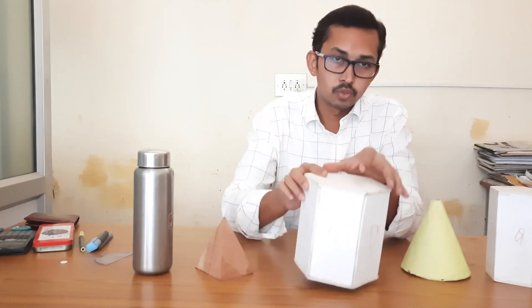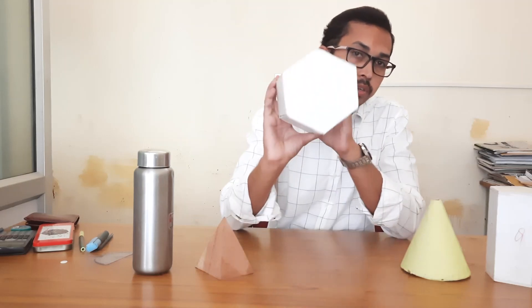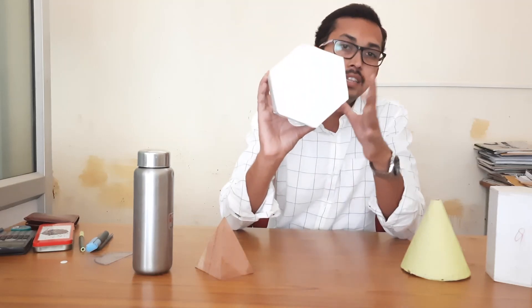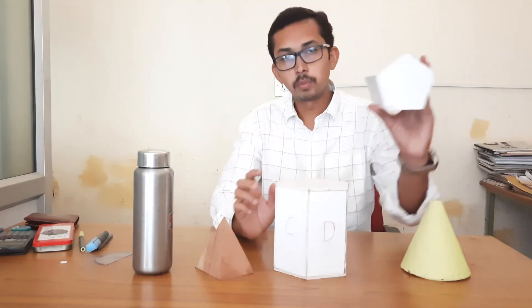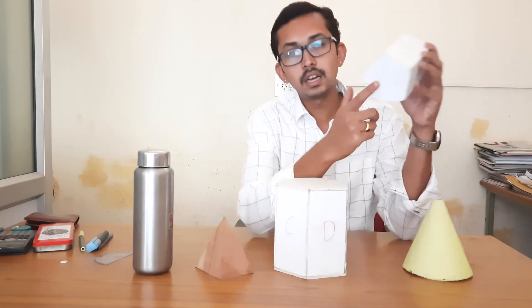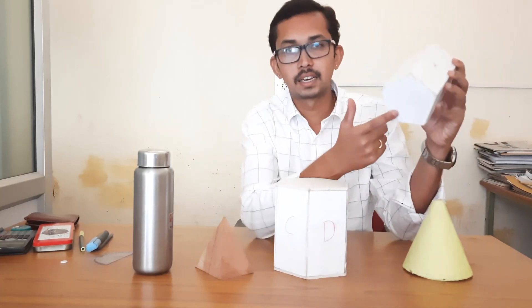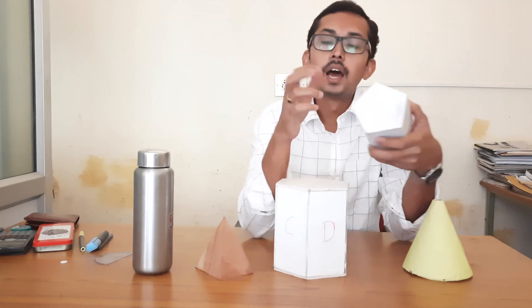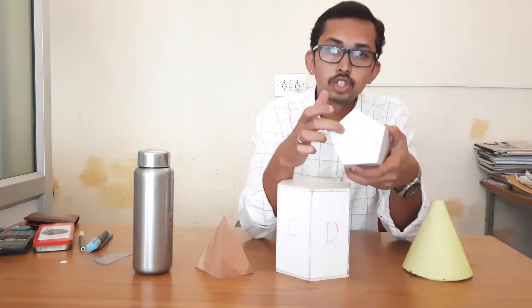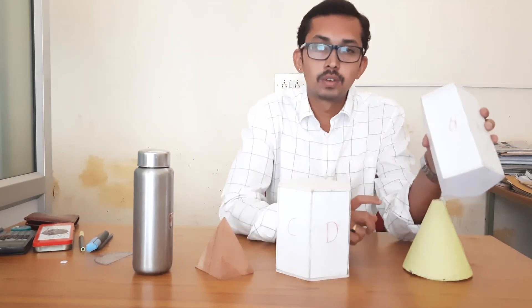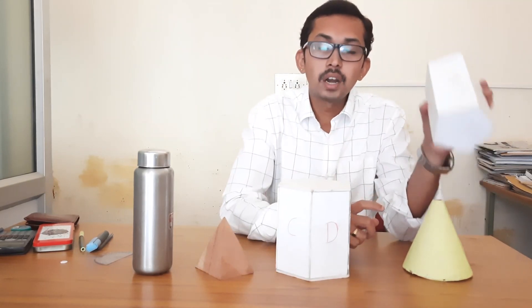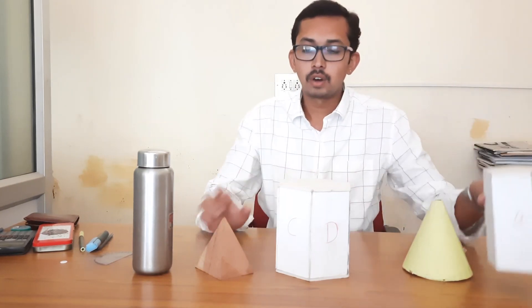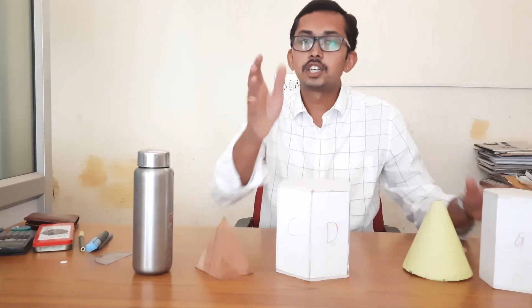So what kind of prism is this one? Here you can see the pentagon — the bottom face is a pentagon and the top face is also a pentagon. So this one is called a pentagonal prism.